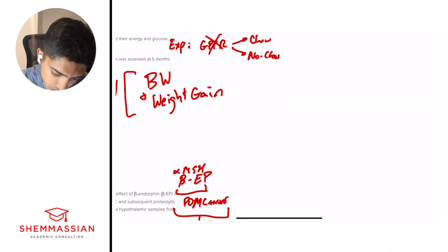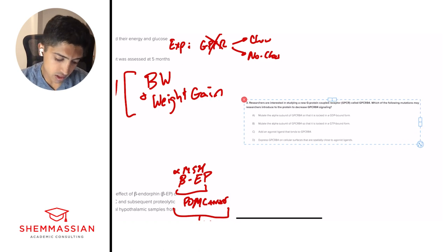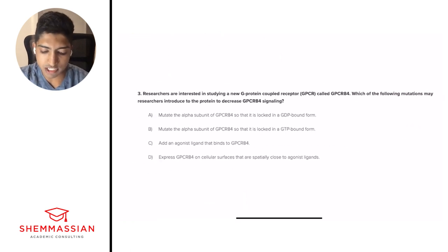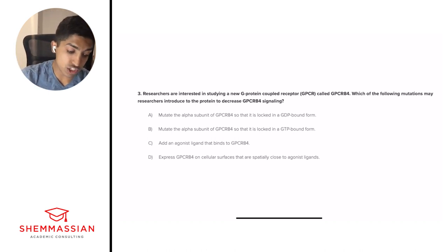All right, question number three. Researchers are interested in studying a new G-protein coupled receptor, GPCR, called GPCR84. Which of the following mutations may researchers introduce to the protein to decrease GPCR signaling? Mutate the alpha subunit of GPCR84 so that it is locked in a GDP-bound form. B. Mutate the alpha subunit of a GPCR84 so that it is locked in a GTP-bound form. C. Add an agonist ligand that binds to GPCR84. Or D. Express GPCR84 on cellular surfaces that are spatially close to agonist ligands. So this one's a challenging question, but we have to know exactly what we're talking about. And that is GPCR, a very important type of receptor I highly recommend you review.